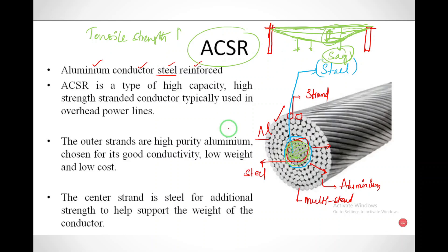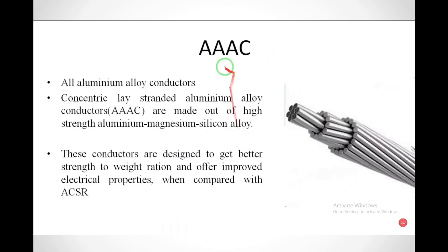ACSR is used for transmission lines. The outer strands are high-purity aluminum chosen for good conductivity, low weight, and low cost. The center strand is steel for additional strength to help support the weight of the conductor.